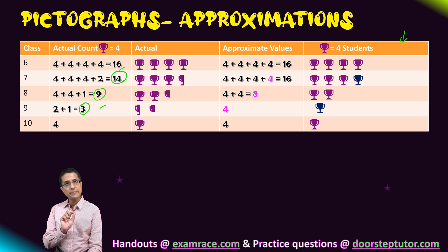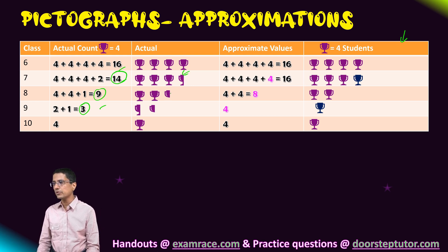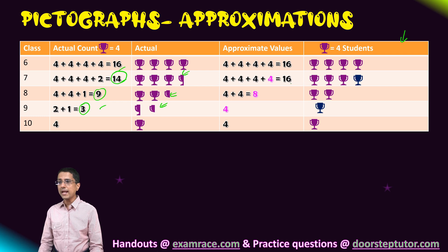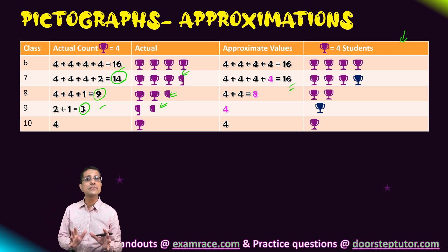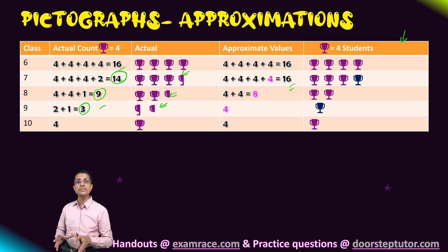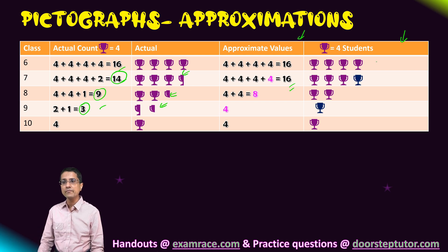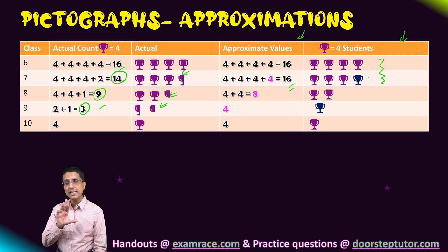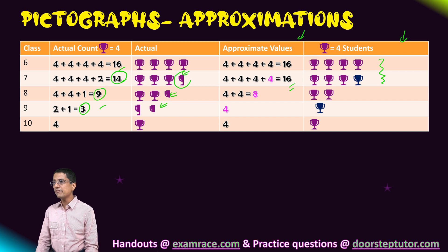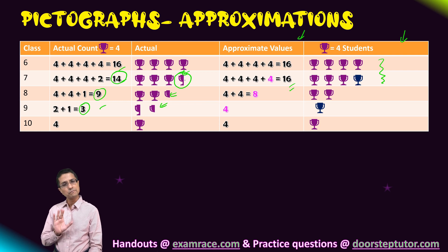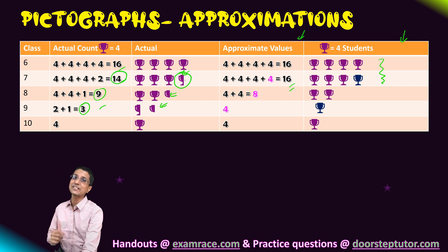Values like 14, 9, and 3 that are not multiples of four can be represented in two ways: either create new symbols to accommodate these values exactly, or approximate using complete symbols. Both approaches are acceptable depending on what the question asks. Read the question carefully — if approximation is allowed, use complete symbols; if exact representation is required, invent new symbols like half or quarter trophies.